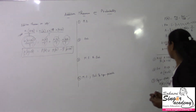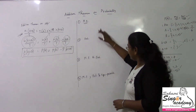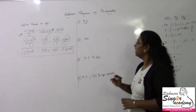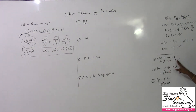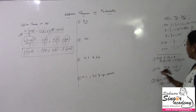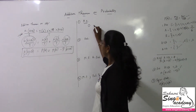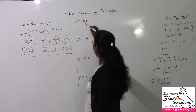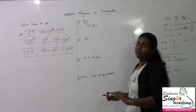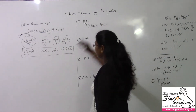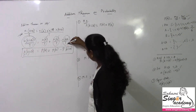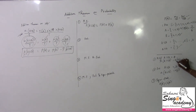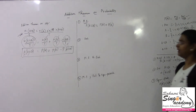First case — mutually exclusive: n(A ∩ B) = 0. So P(A ∩ B) = 0/total = 0. Therefore, the addition theorem becomes P(A ∪ B) = P(A) + P(B) − 0, which simplifies to P(A ∪ B) = P(A) + P(B).